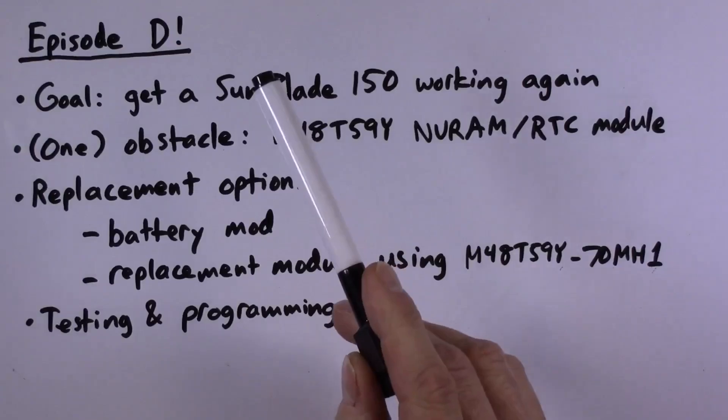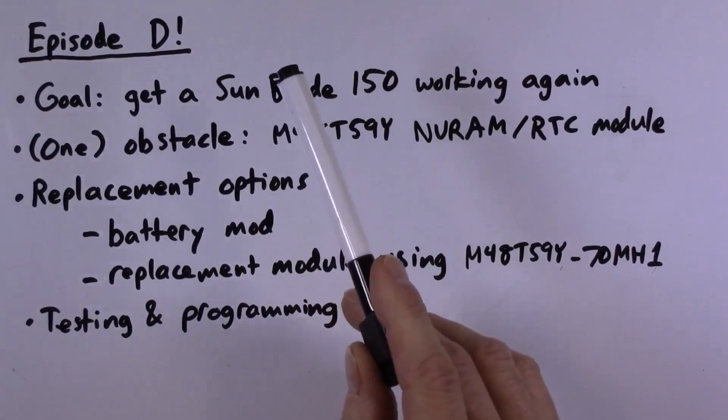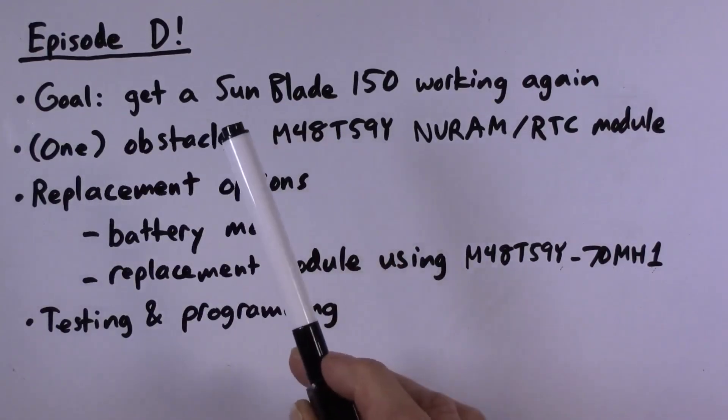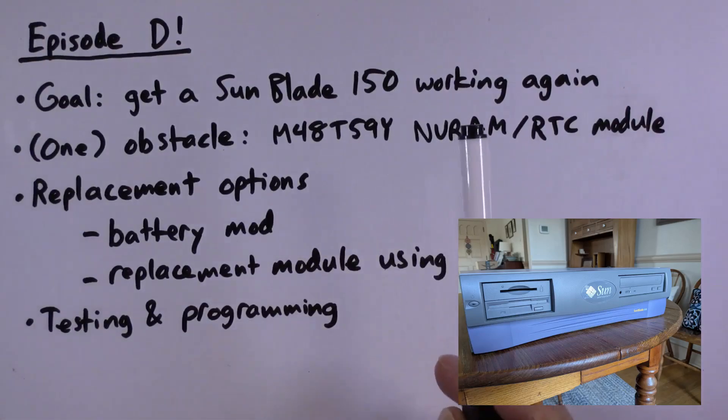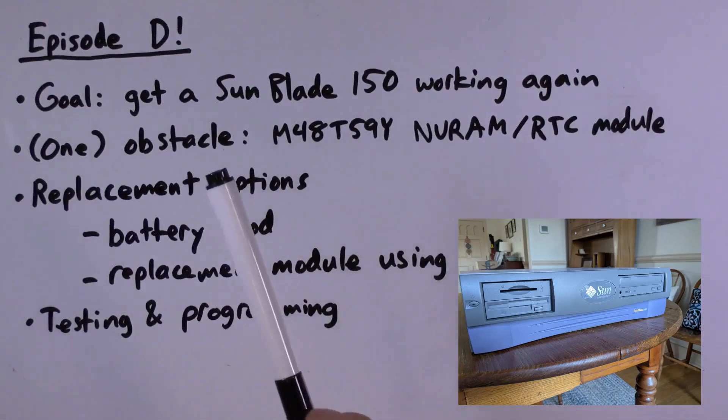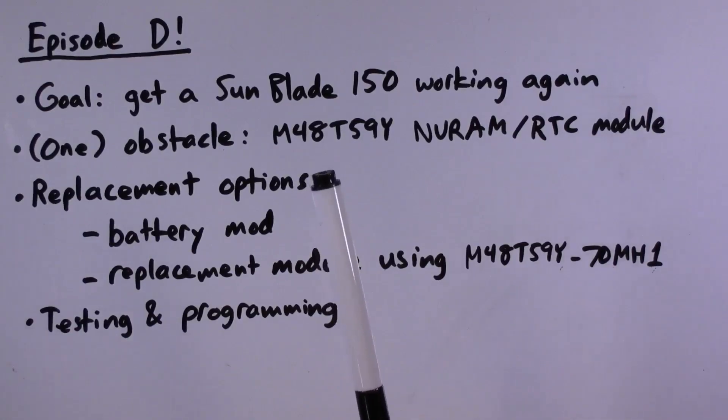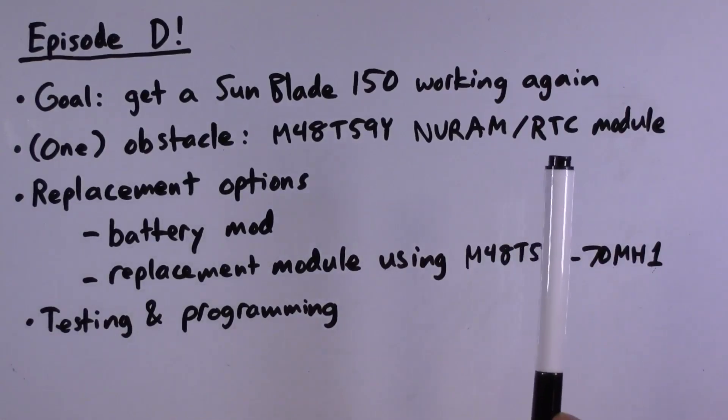Welcome to episode 13 of the Random Stuff series. My eventual goal is to get a Sun Blade 150 workstation working again. One of the steps will be finding a replacement for the M48T59Y non-volatile RAM real-time clock module.